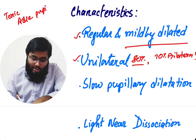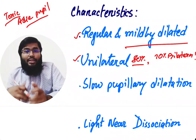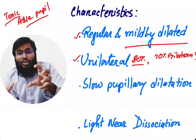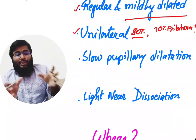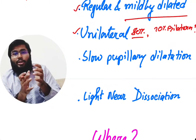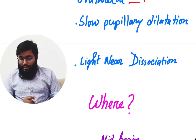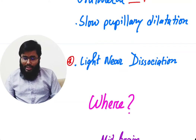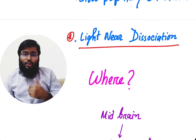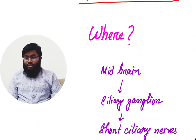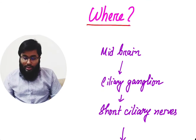That is why Holmes-Adie pupil is also known as tonic Adie pupil — the pupil is always in a tonic muscle contraction, but as time passes the pupil will slowly dilate. There is another term: light-near dissociation, which we will discuss shortly.